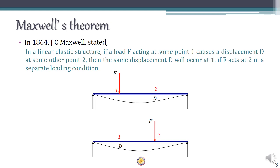According to Maxwell's theorem, in a linear structure, if a force F applied at point one causes a deflection d at point two, then the same force F applied at point two will cause the same deflection d at point one. This is just a reverse condition, and this theorem is valid only for a linear elastic structure.